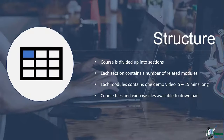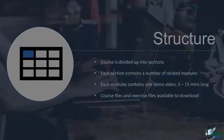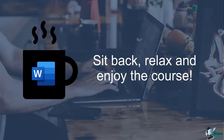The course is divided into sections, each related to a particular topic in Word. Within each section you'll find a number of modules or lessons, and each module contains one demo video typically between five and fifteen minutes long. You'll find all the files used in the demo videos in the course files folder so you can download and follow along, and at the end of each section there's a practice exercise.